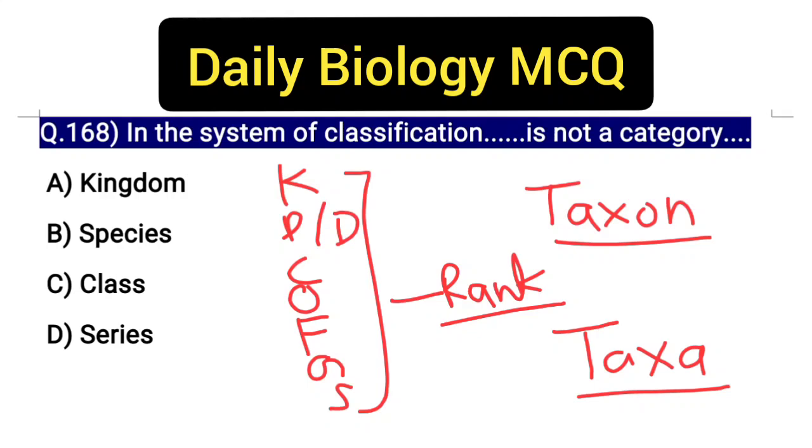Okay, don't confuse. Rank word is used. Taxon, taxa word is used. Taxonomic category word is used. These things connect to each other. The category is called rank. And taxon, taxa is one thing. Don't confuse.